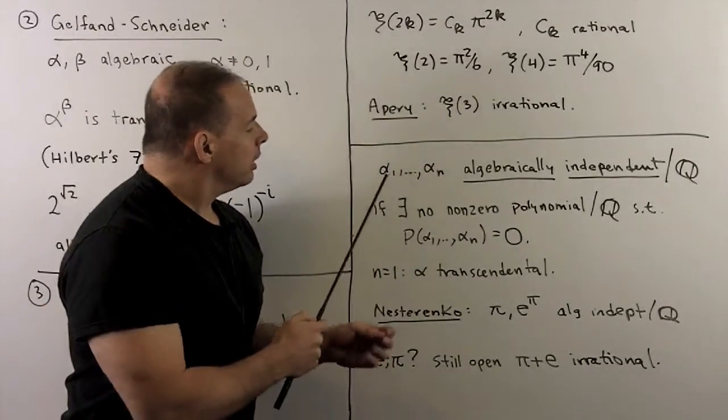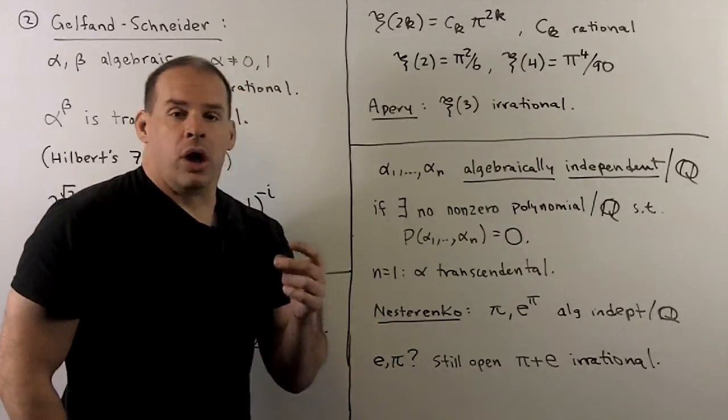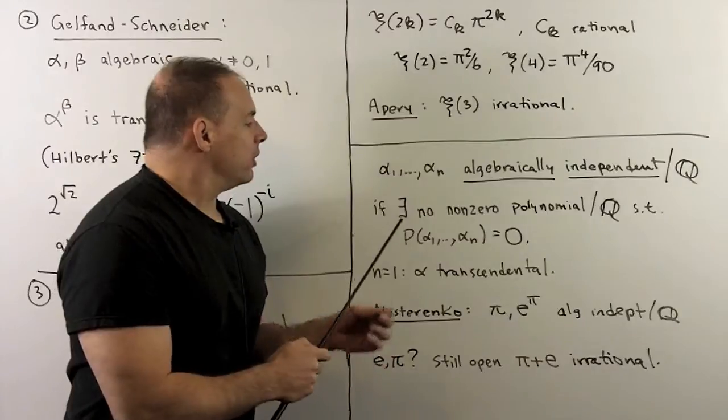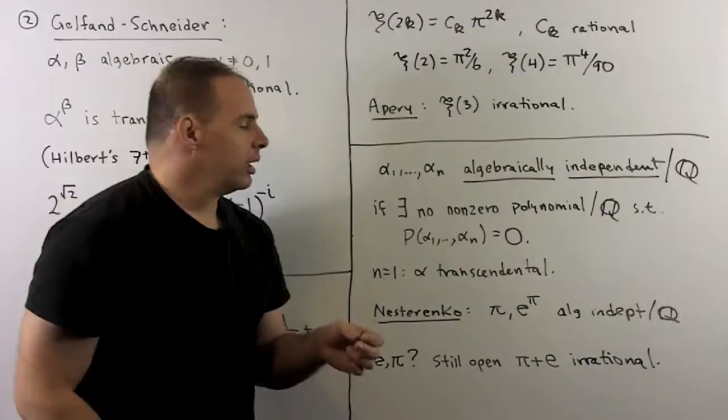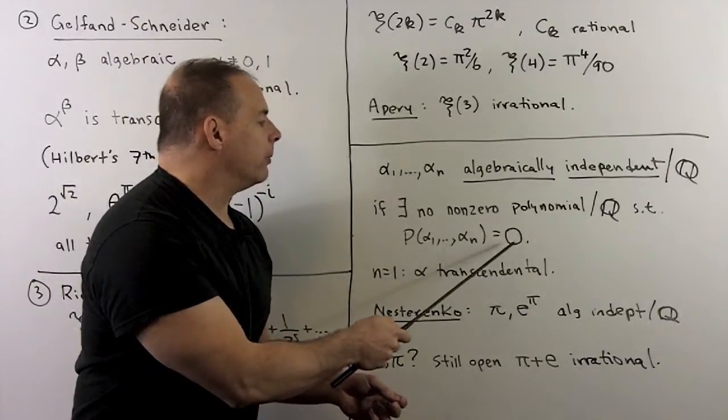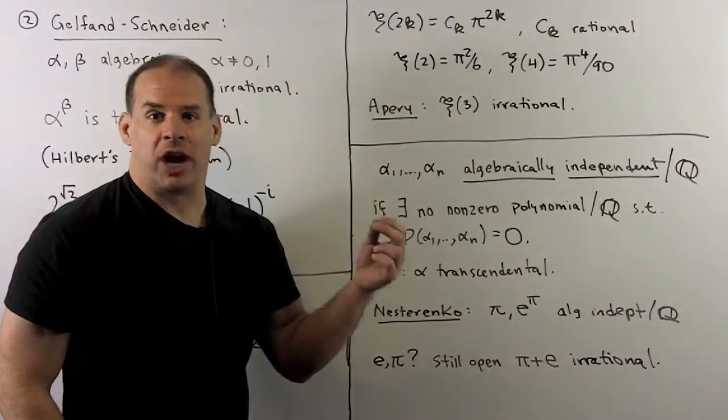For another direction, we start with the definition. We'll have complex numbers, alpha one through alpha n. Call these algebraically independent over the rationals if there's no non-zero polynomial over the rationals in n variables, such that p applied to alpha one through alpha n is zero. When n is equal to one, this is a special case of transcendental.